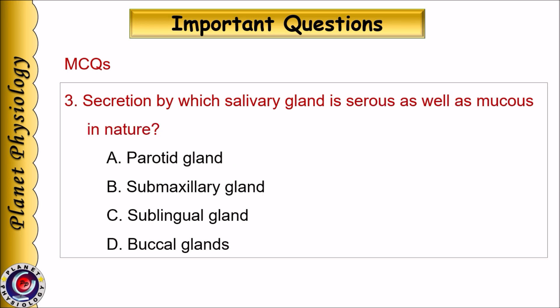Secretion by which salivary gland is serous as well as mucous in nature? A. Parotid, B. Submaxillary, C. Sublingual, or D. Buccal.